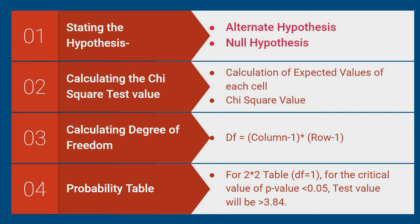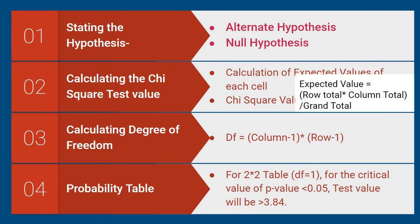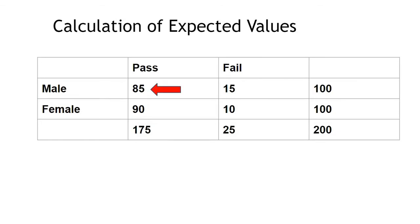The second step is calculating the chi-square test value. We need to calculate the expected values of each cell using the formula: row total multiplied by column total, divided by grand total, for each cell value. In the same example comparing association between gender and results, what appears in the cell is the observed value. We need to calculate the expected values using column total multiplied by row total divided by grand total.